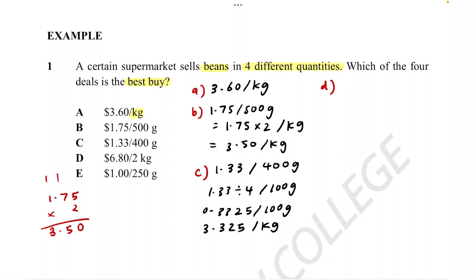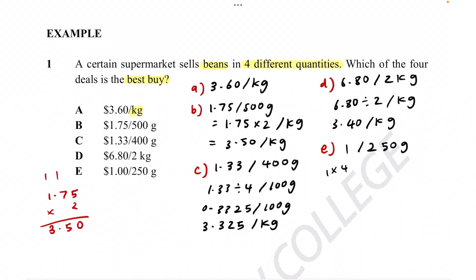So D has $6.80 per 2 kilograms. We just need to divide 2 on each side to get 1 kilogram. So it will be 6.80 divided by 2 per kilogram. We know 6 divided by 2 is 3, and then 80 divided by 2 is 40. So we get $3.40 per kilogram. Finally, we have E, which is $1 per 250 grams. This one's also quite easy as we can just times 4 because 250 times 4 is 1,000, which is 1 kilogram. So 1 times 4 per kilogram. We know it's $4 per kilogram.